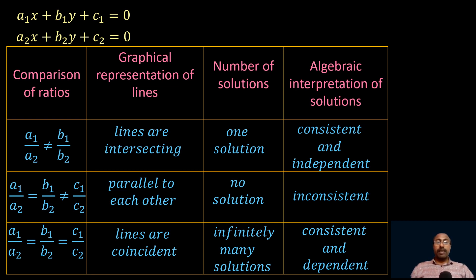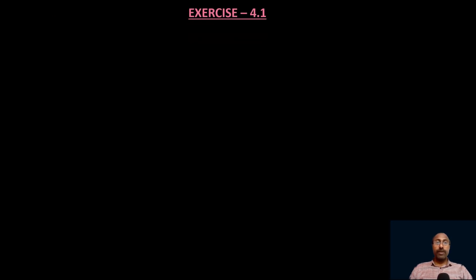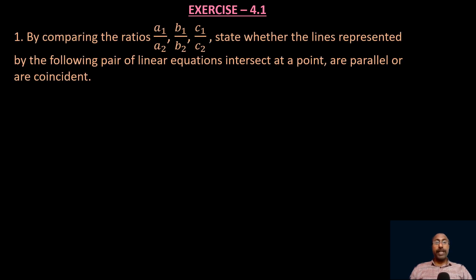Now let us start Exercise 4.1, which is based on this table. By comparing the ratios a1/a2, b1/b2, c1/c2, we have to check whether the lines represented by the given equations intersect at a point, are parallel, or are coincident.